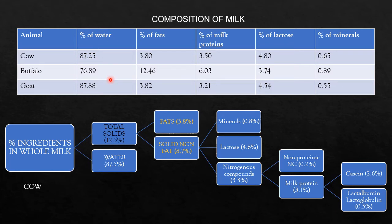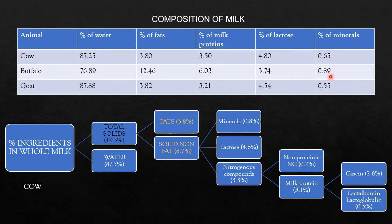The percentage of water is higher in goat milk at 87.88%. Fats are more in buffalo milk at 12.46%. Milk proteins are also higher in buffalo milk at 6.03%. The percentage of lactose is higher in cow milk at 4.80%, and minerals are again highest in buffalo milk at 0.89%. We generally prefer cow or buffalo milk, though goat milk is preferred in some rural areas.